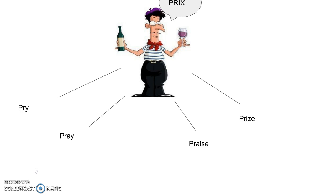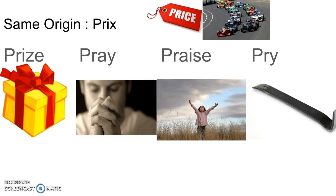The second definition for a doublet is a word that comes from the same origin but is used in two or more ways. A French example is 'pray,' 'praise,' and 'price,' all of these words coming from 'prix.' Another example is 'cattle' and 'chattel.' As you can see, all of these words are spoken similarly but have different definitions.